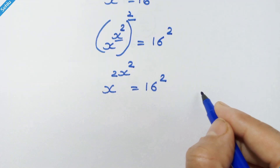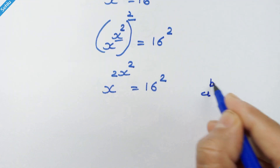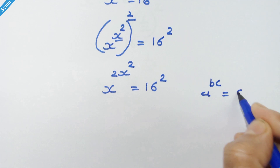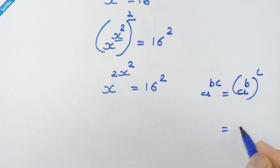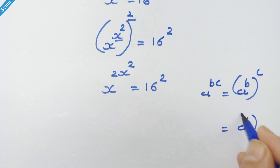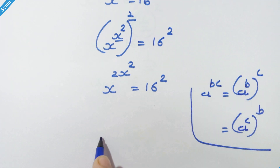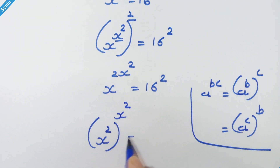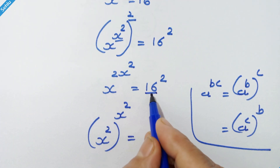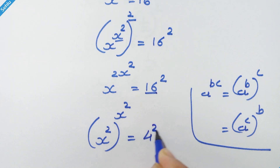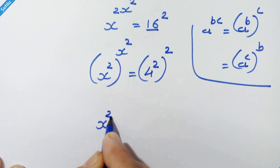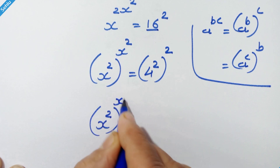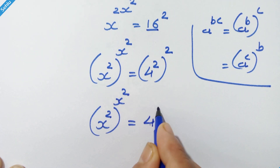Now, as per the rule, if we have a raised to b into c, then it can be written as a raised to b, whole raised to c, and also as a raised to c, whole raised to b. So here we can write x square, whole raised to x square, is equal to... Now 16 is 4 square, so we can write: x square, whole raised to x square, is equal to 4 raised to 4.